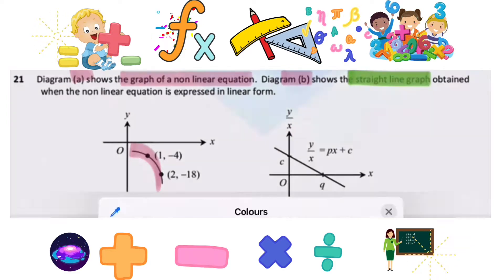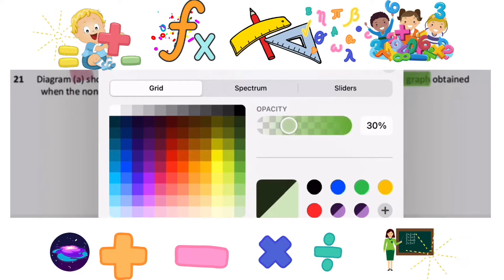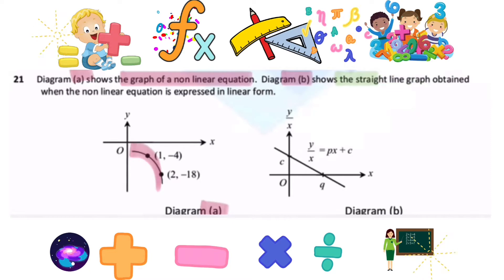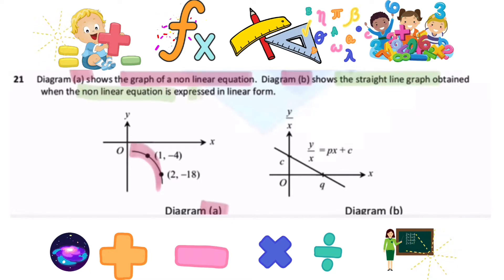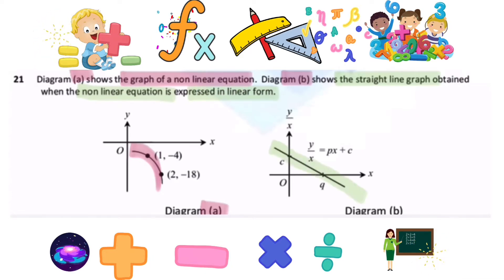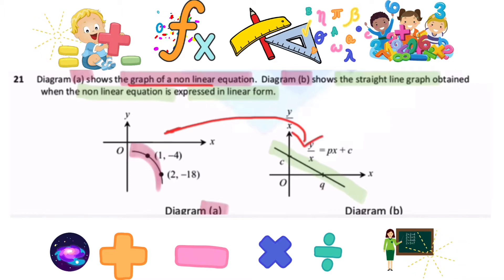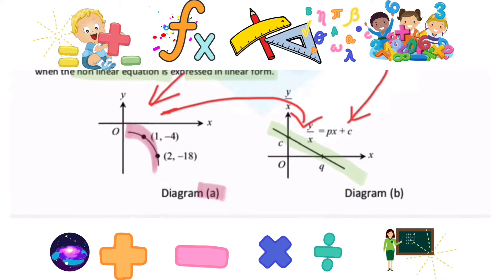We have a linear equation here. The key point is: the straight line is obtained when the non-linear equation is expressed in linear form. So we are going to convert the non-linear graph into this straight line graph.